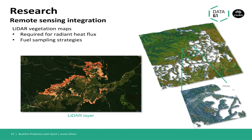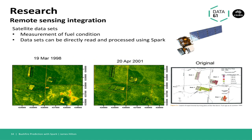Remote sensing data in general has massive potential in this area, especially for looking at fuel states. We're trying to pull in remote sensing data and use it to directly populate input layers in SPARC. This is actually the plots from the Project Vesta experiment showing pre- and post-fire conditions — you can actually see the individual plots that are burnt on these remote sensing maps. These can be converted into an actual fuel age, so you can automate the whole process going from remote sensing data acquisition all the way to input fuel layers within the system.